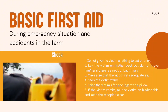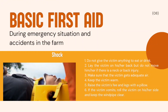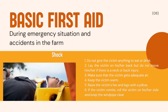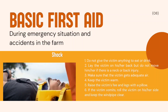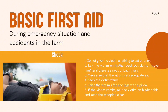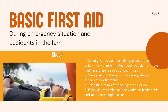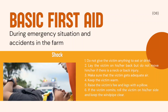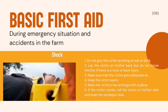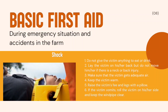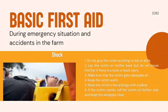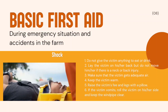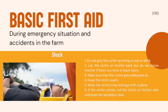Now let us talk about basic first aid during emergency situations and accidents in the farm. 1. Shock. 1. Do not give the victim anything to eat or drink. 2. Lay the victim on his or her back but do not move him or her if there is a neck or back injury. 3. Make sure that the victim gets adequate air. 4. Keep the victim warm. 5. Raise the victim's feet and legs with a pillow. 6. If the victim vomits, roll the victim on his or her side and keep the windpipe clear.